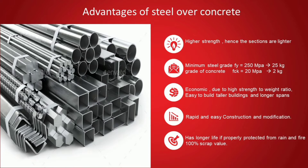The main factor of using steel over concrete is its high strength, hence the sections are lighter. Comparing the minimum steel grade and concrete grades: the minimum grade of steel, that is 250 MPa mild steel, can carry up to 25 kilograms, while the same amount of concrete can carry only up to 2 kilograms. Another important factor is that it is economic due to its high strength-to-weight ratio.